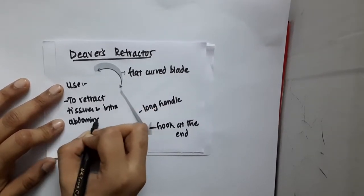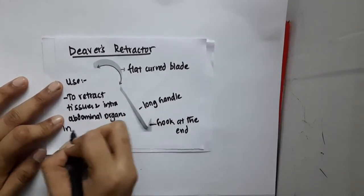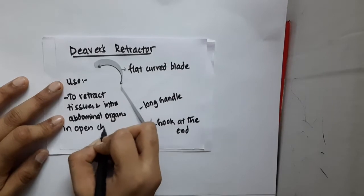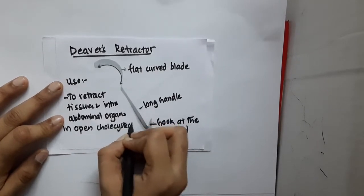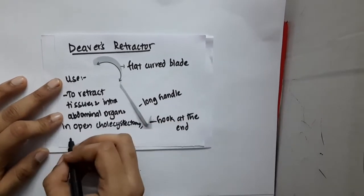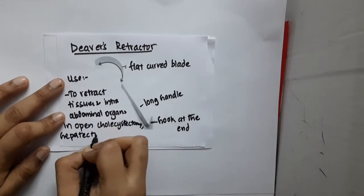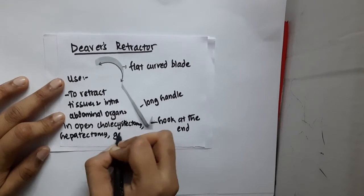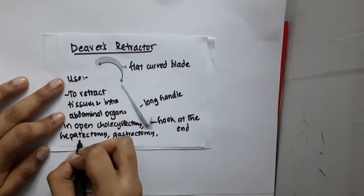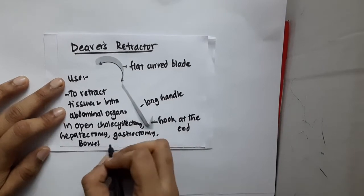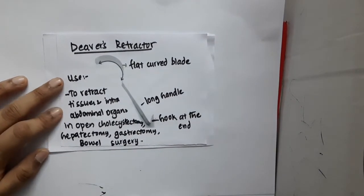It is used to retract tissues and intra-abdominal organs in open cholecystectomy, and also to retract tissues in hepatectomy, gastrectomy, and bowel surgeries. This is the Deaver's retractor.